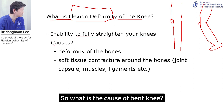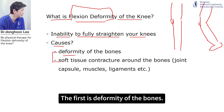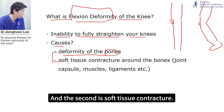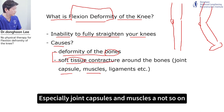So what is the cause of bent knee? There are two reasons. The first is deformity of the bones. And the second is soft tissue contracture, especially joint capsules and muscles, and so on.